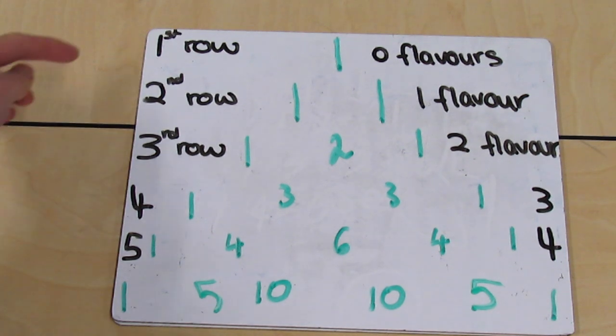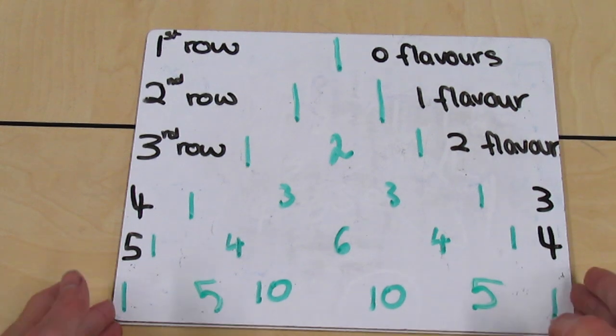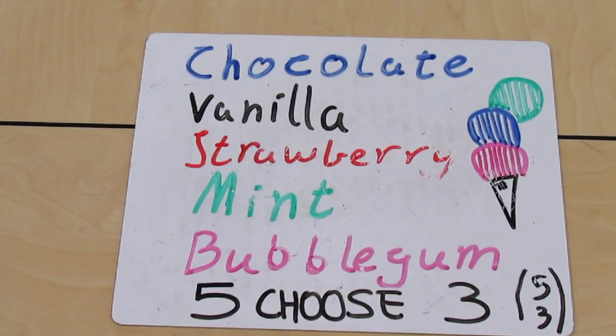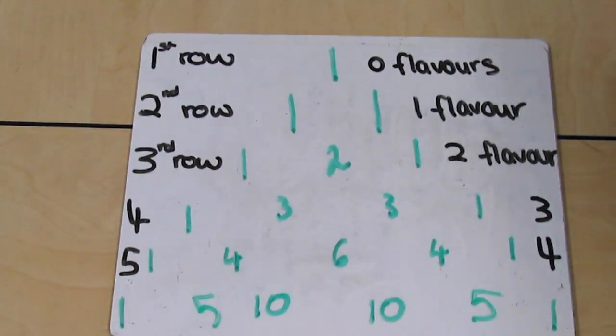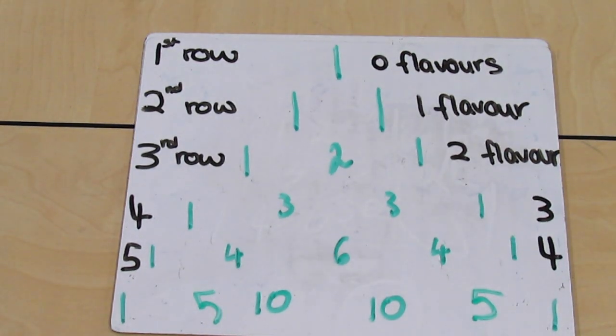However, this would therefore mean the first row. This is still the second row. This is still the third, fourth, and fifth. So if we were given, for example, five flavors of ice cream and we were to choose three, we would look at the sixth row where there would be five flavors of ice cream. Now, we were to choose three.